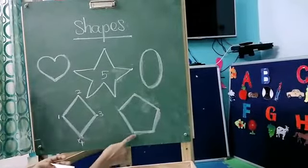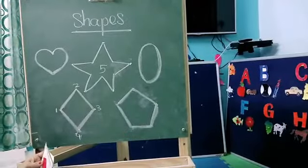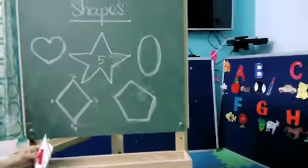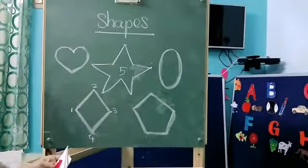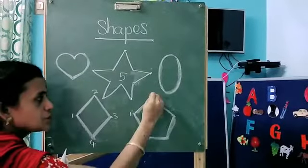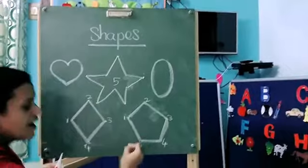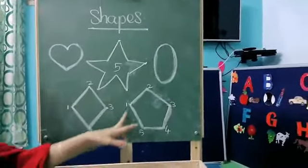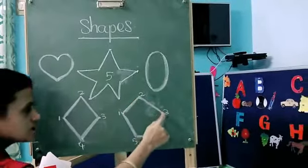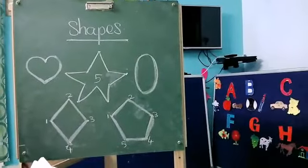Next, what is the shape? Everybody say — what is the shape? Yes, this is a pentagon. Everybody say — pentagon. How many corners for pentagon? One, two, three, four, five. Okay kids, how many corners for pentagon? Come on — one, two, three, four, five. Five corners.